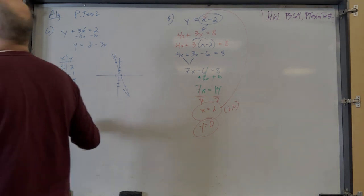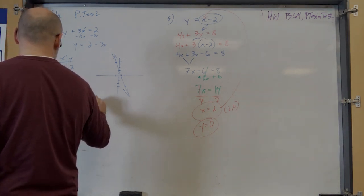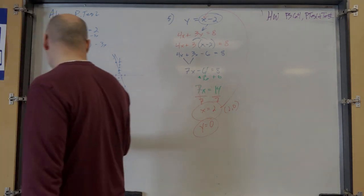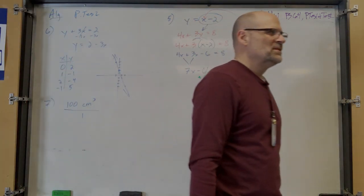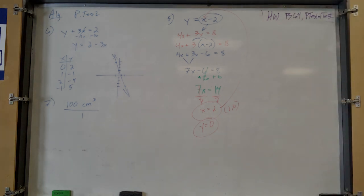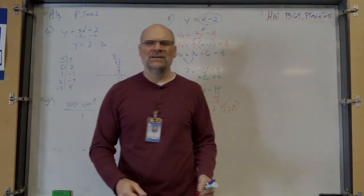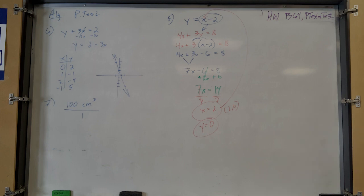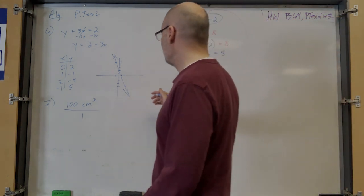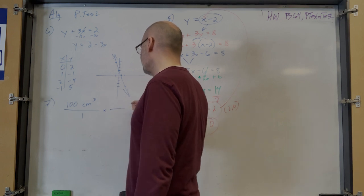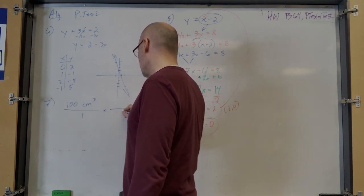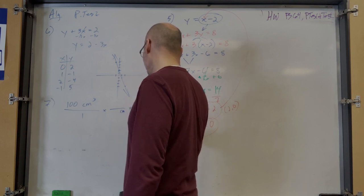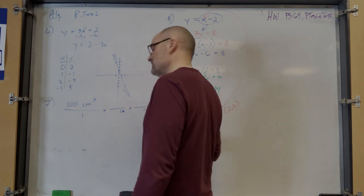Number seven: use unit multipliers to convert 100 cubic centimeters to cubic feet. We need to go from centimeters to inches first, then inches to feet. Since it's cubic, we need six unit multipliers total — three to get from centimeters to inches, and three to get from inches to feet.